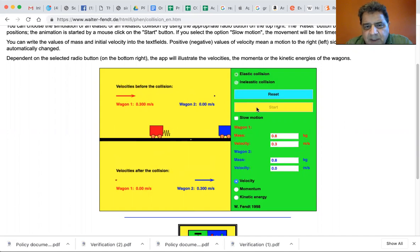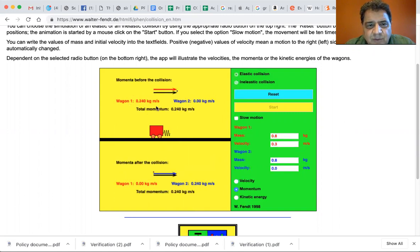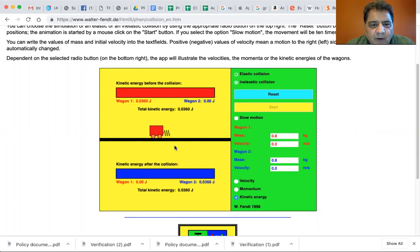And you can see there's the exchange of velocities. But notice that it shows you the velocity before and the velocity after. It also shows you the momentum before and the momentum after. And it shows you the kinetic energy before and the kinetic energy after. Not only in graphical form, but it shows you see wagon one is 0.036 joules, wagon two is zero joules. And the total kinetic energy is 0.036 joules.